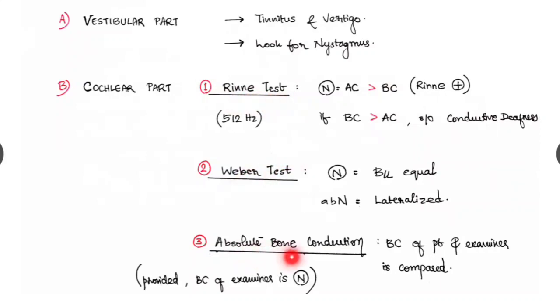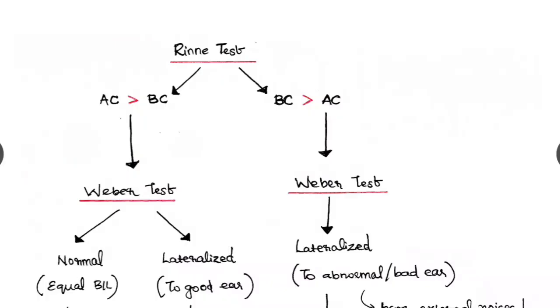The Rinne test, Weber's test and the absolute bone conduction. In Rinne test we look for air conduction and bone conduction. Normally the air conduction will be greater than the bone conduction. And it is Rinne positive. If bone conduction is greater than air conduction, it is suggestive of the conductive deafness. Weber's test normally is bilaterally equal. If it is abnormal, it will be lateralized. And third, the absolute bone conduction. We are comparing the bone conduction of the patient with that of the examiner, assuming the bone conduction of the examiner will be normal. And this is the way how we check it.